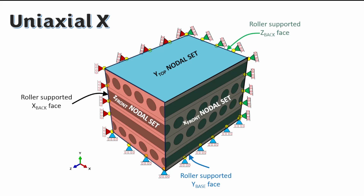For a uniaxial X deformation, with the pre-existing roller supports already applied on the Z back, X back, and Y base faces, we simply apply a displacement to reference point 1. Once that displacement is applied, we ask the simulation to output the displacement in the 1-direction and the reaction force in the 1-direction. This is how you apply X-axis tensile deformation.